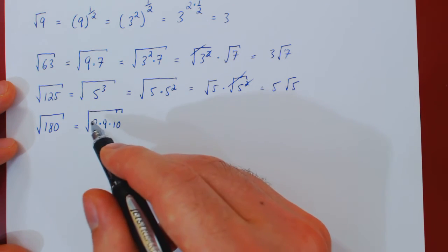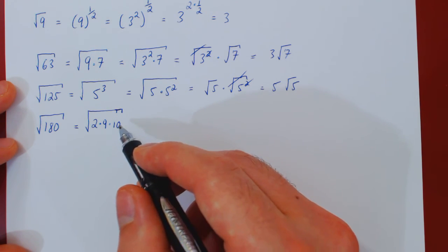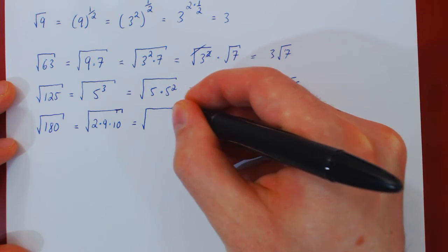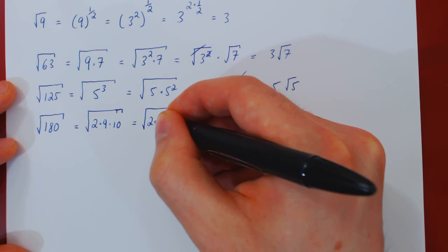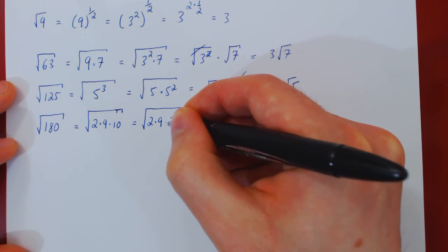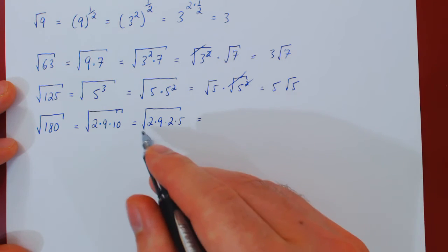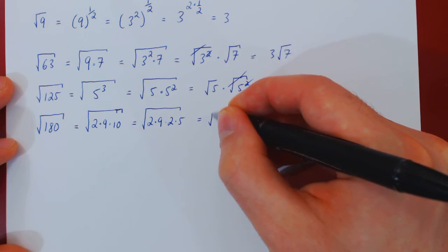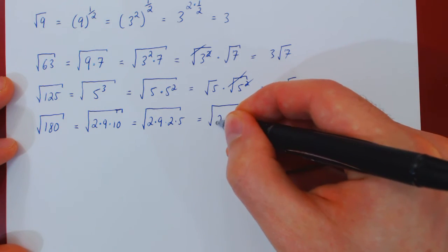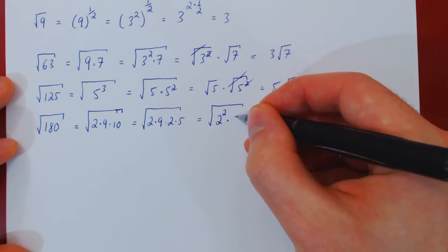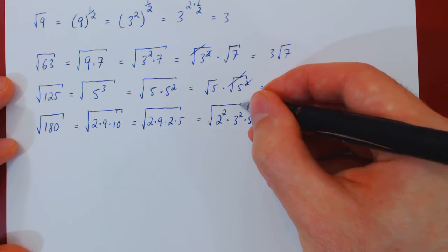So far we have a perfect square in 9, not in 10 and not in 2, but if we factor 10, 10 is 2 times 5. So we have 2 times 9 times 2 times 5, and now we can collect the two 2's together. So we have the square root of 2 times 2 is 2 squared, times 9 is 3 squared, and then the leftover 5.